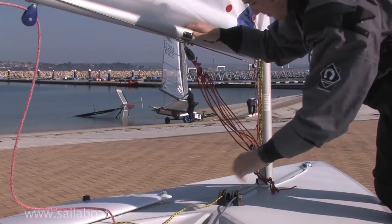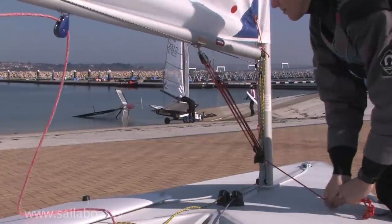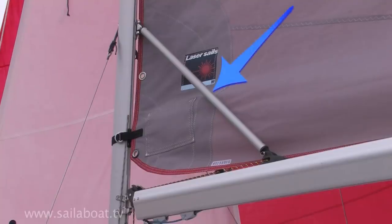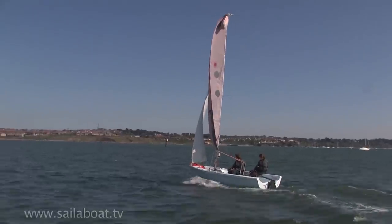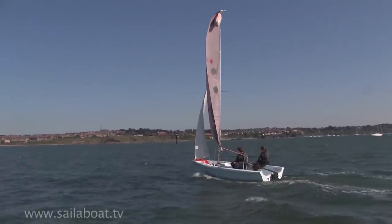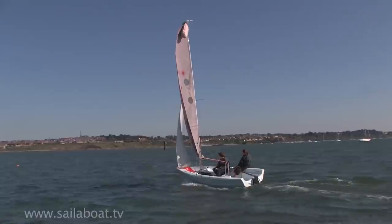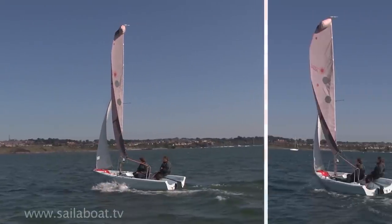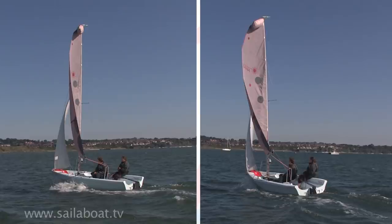Another sail control is the kicking strap. The kicking strap can be configured to look like this or like this. The kicking strap function is to stop the boom from rising when the mainsheet is released. This shot shows the kicking strap correctly tensioned. This shot shows the boom where the kicking strap is too loose. If your sail looks like this, the boat will be hard to control.